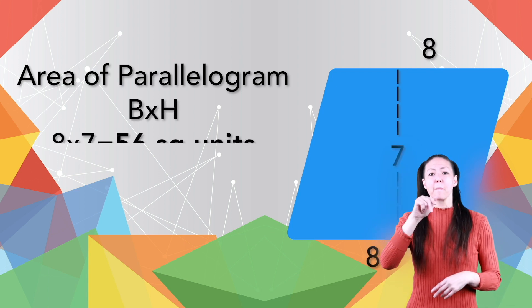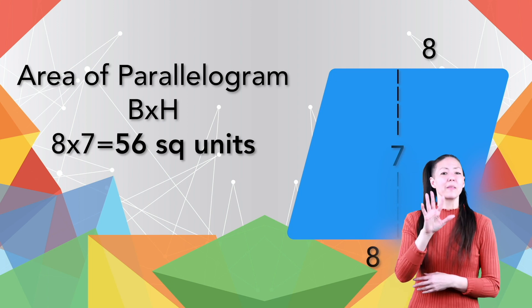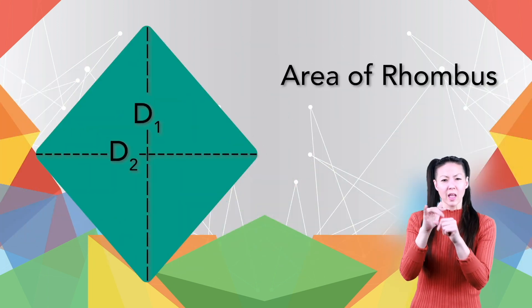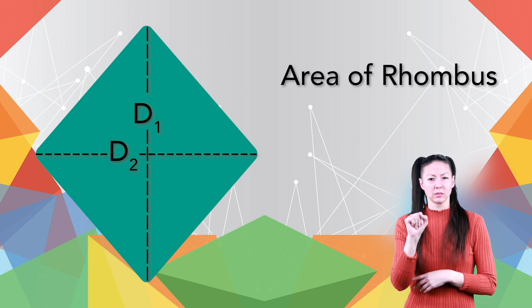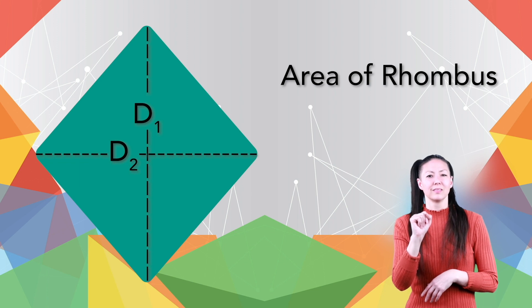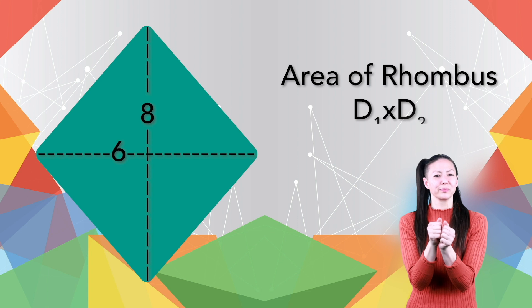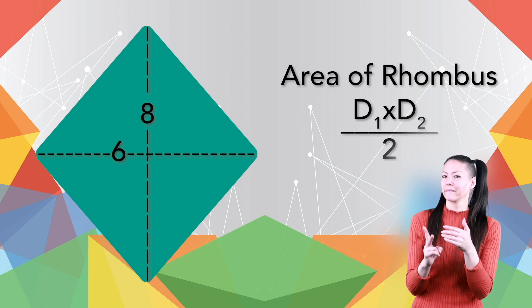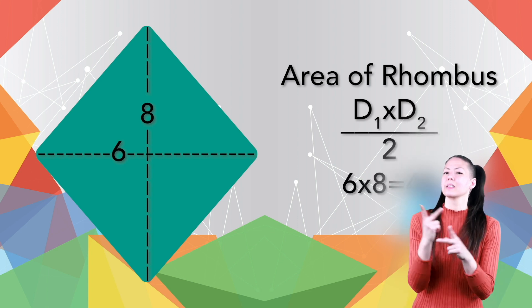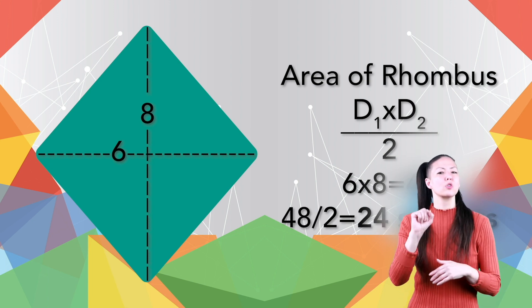To figure out the area of a rhombus, you have to use its two diagonals. This rhombus has two diagonals of six and eight. The formula is to multiply them together and then take half. Six times eight is 48, and half of that equals 24 square units.